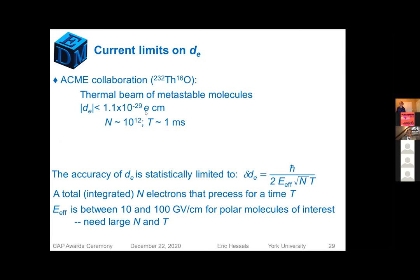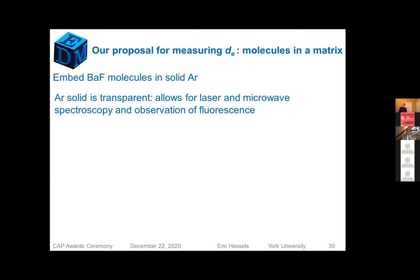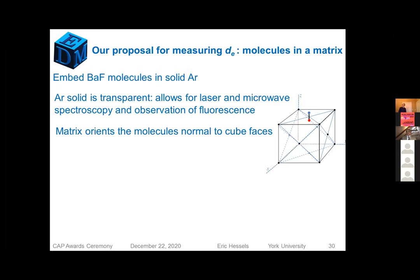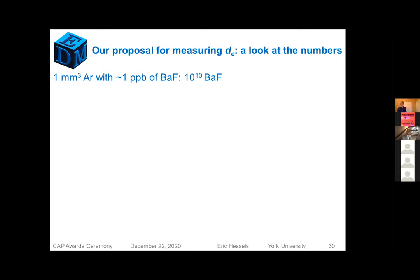You can't really get very far on the electric field because there are no polar molecules that give you more than 100 gigavolts per centimeter, huge fields. But what you can do is try to get more electrons and more time, and that's what we're trying to do. So, the current limit is 1 times 10 to the minus 19 E centimeters, and that uses 10 to the 12 electrons each study for a millisecond. That's in thorium monoxide, and that's in a beam, and so you only have one millisecond because they're passing by you in a beam. So we're going to embed our molecules. That means that we can hold them for a long time. Argon is transparent, so we can do laser spectroscopy, fluorescence, and most importantly, the matrix orients the molecules.